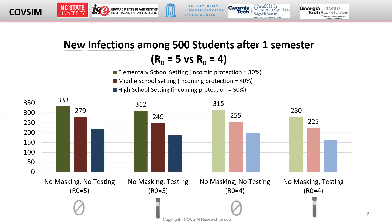The situation is even more troubling when the R0, or reproductive rate, is increased to 5, which may happen as the Delta variant becomes even more dominant in the population. If the same middle school remains without testing or universal masking, upwards of 333 new infections will occur throughout the semester.